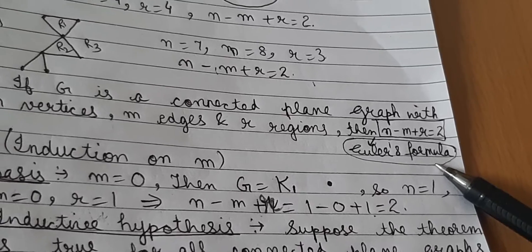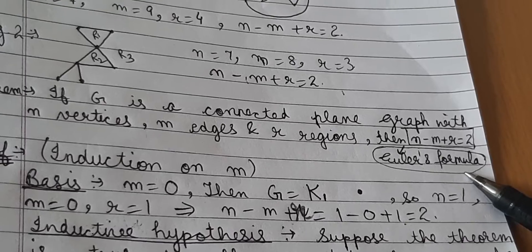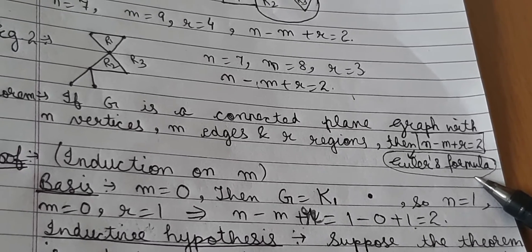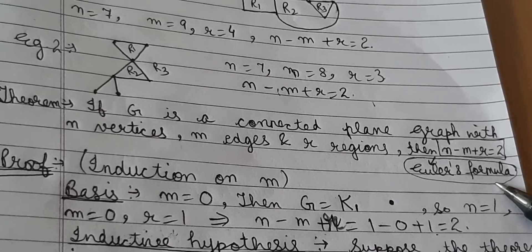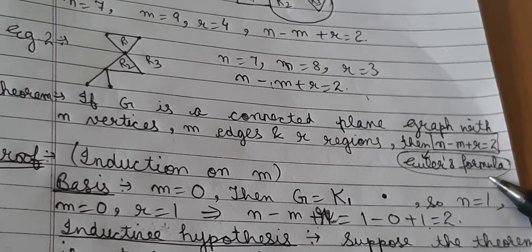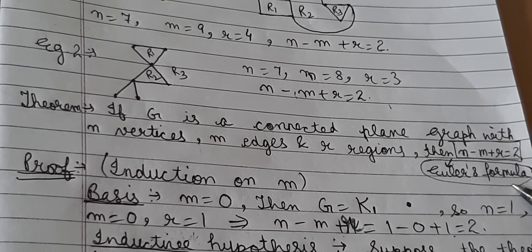This is Euler's formula. Euler has a lot of formulas for different areas of mathematics, but remember he actually created the area of mathematics known as graph theory. We have seen that the theorem works for these two examples, but now we want to figure out how to prove it in general.